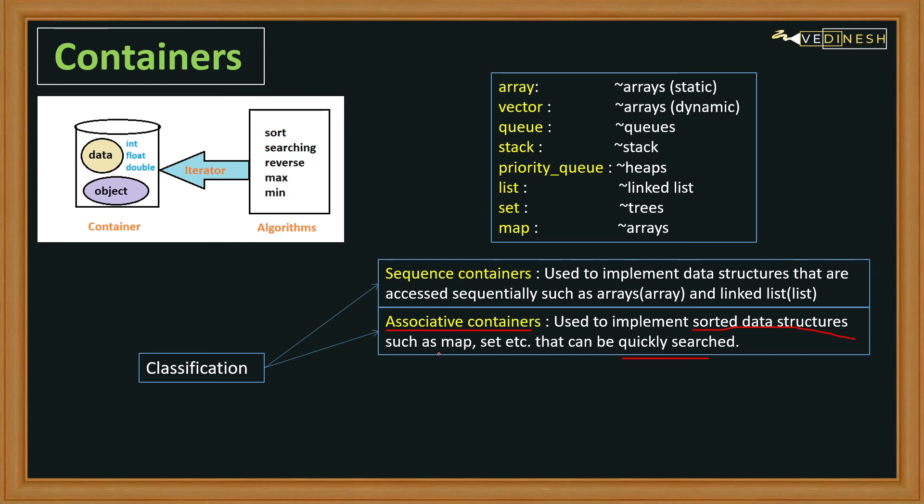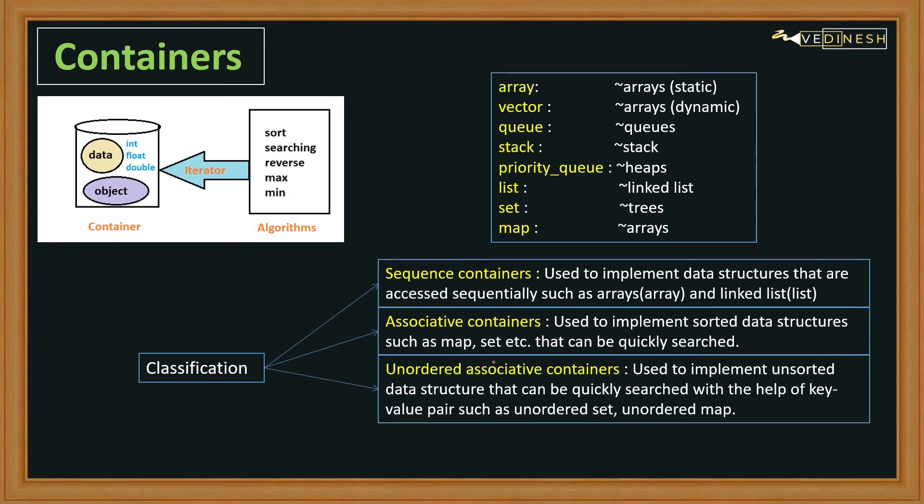Now the next type of container is unordered associative containers. These are used to implement unsorted data structures. So here there's sorted data structure, but here we're implementing unsorted kinds of things. These also help us in quickly searching the element with the help of key-value pairs. With the help of a key, we can quickly access that element. Examples are unordered set and unordered map.